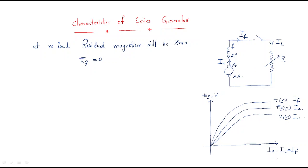On the x-axis, Ia equals IL equals If since all currents are the same. At zero field current, Eg is zero, so the curve starts at the origin. In the ideal case, as field current increases the EMF increases, because generated EMF is proportional to field current. More load means more field current, which increases the generated EMF.